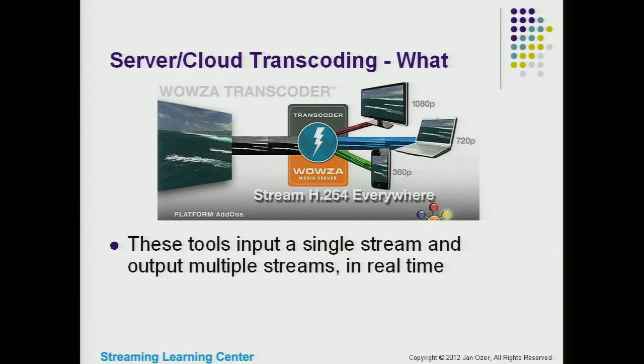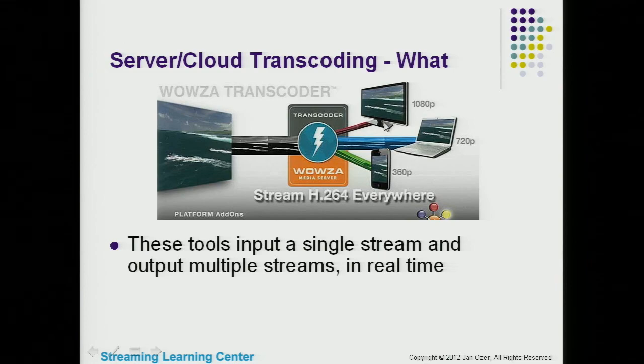The last category is server and cloud transcoding. A single stream comes in, goes into the cloud or server, and in real time is transcoded into multiple iterations — technically a trans-rate since it takes H.264 in and trans-rates it to different sizes and data rates. High-level point: one stream in, multiple streams out.